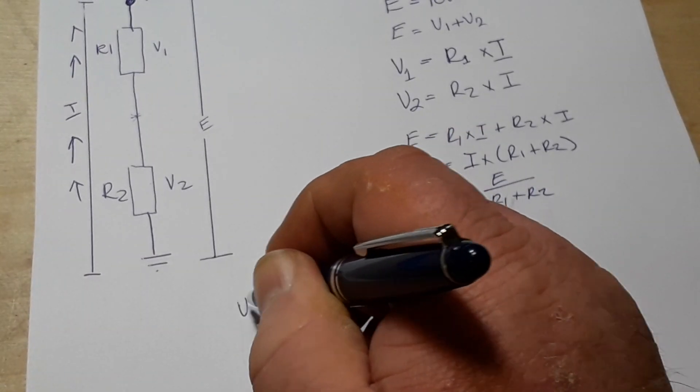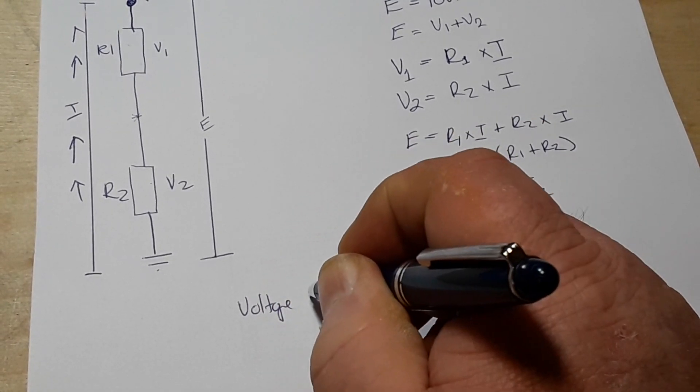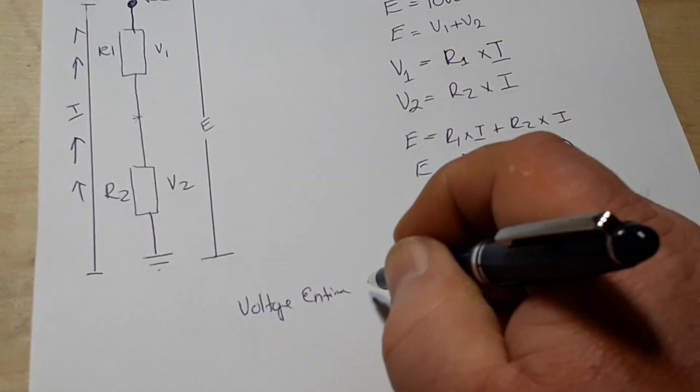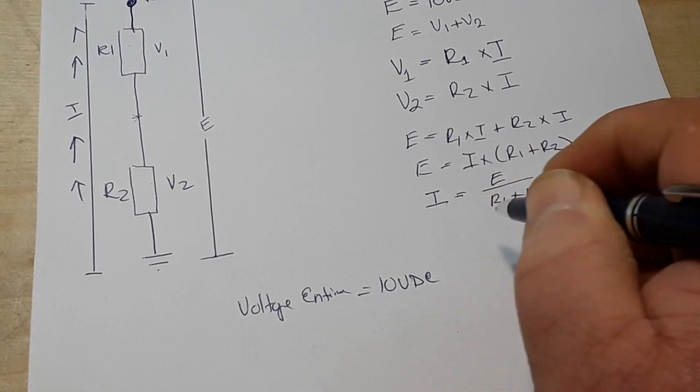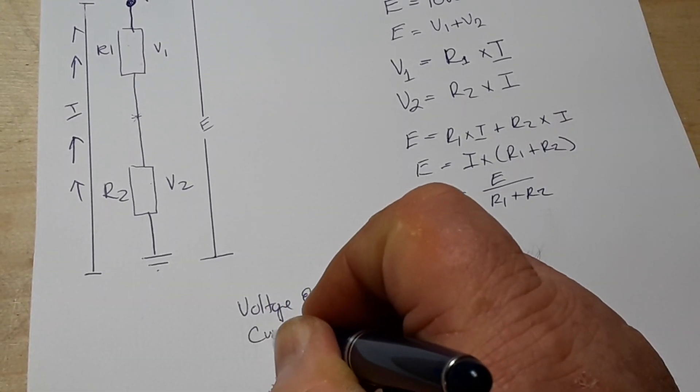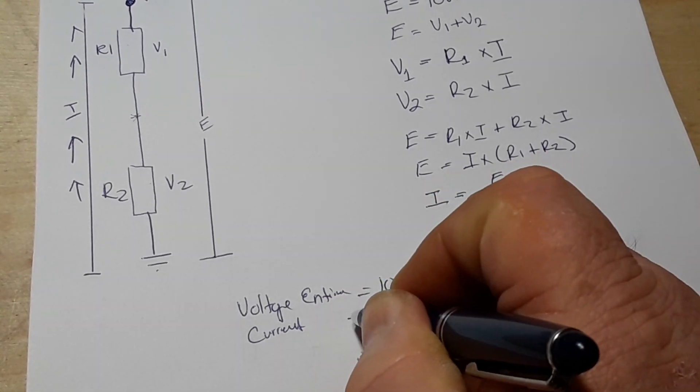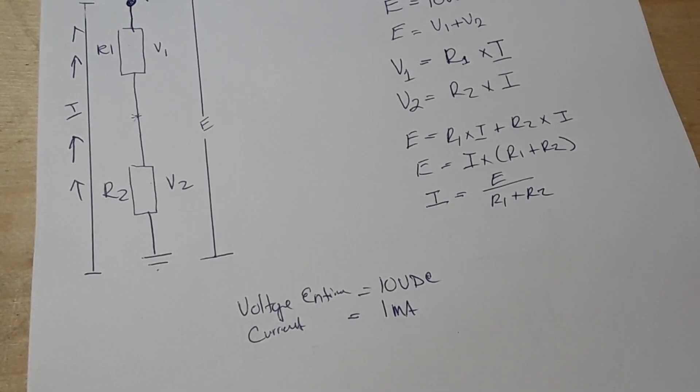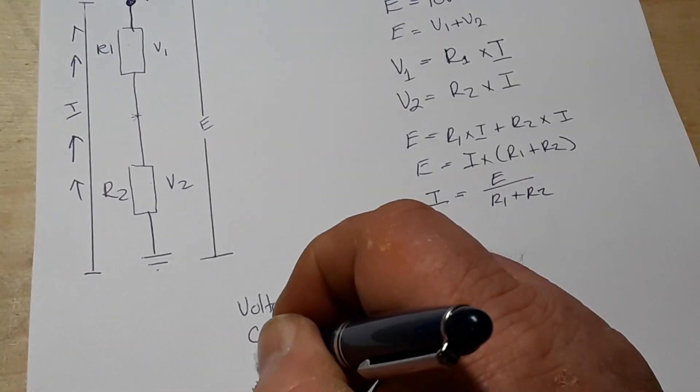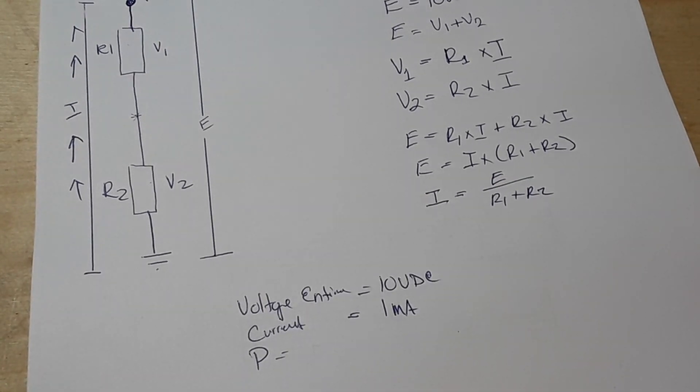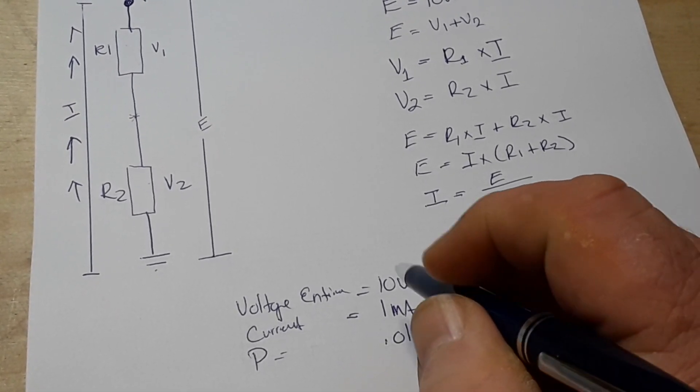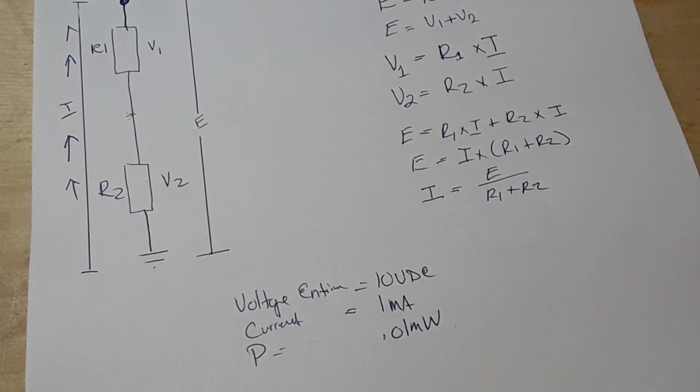We know that the voltage of the entire circuit, or our voltage in, I guess you'd call it our feed voltage, is 10 volts DC. And we know that the current is 1 milliamp. Well, now we can also calculate power, if we wanted to, right? So, our power is 0.01 milliwatts.